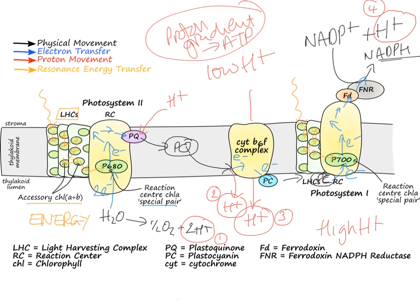So as a result of this process, we've split water, we've generated a proton gradient which can then be used to make ATP, and we've made NADPH. And remember, the ATP and the NADPH are needed in the Calvin cycle, so we're now ready to go and do the carbon fixation reactions.